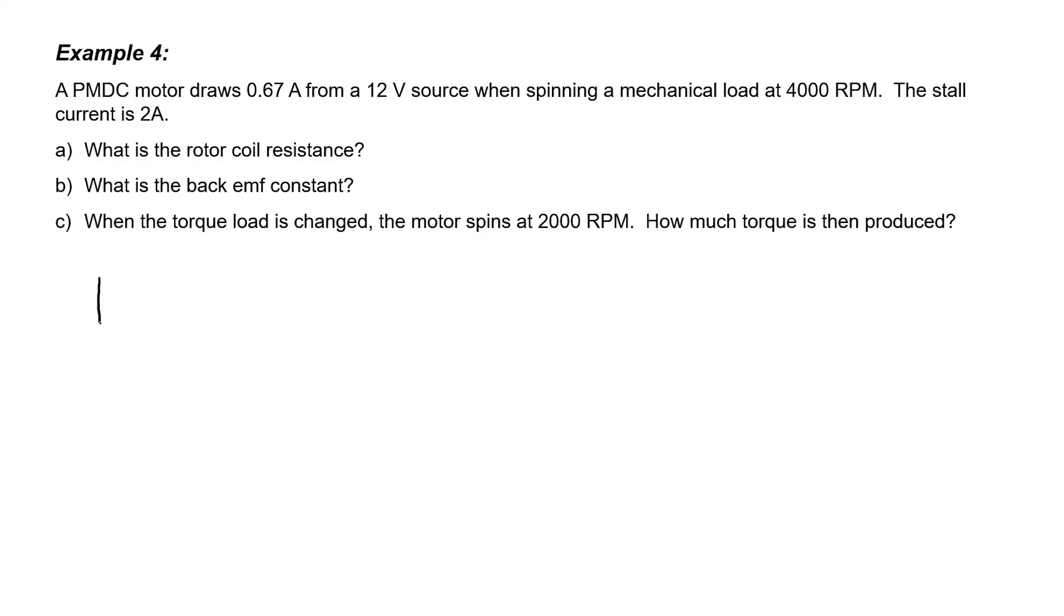In previous examples, we've looked at motors operating at a single speed driving a single load. In this example, we're going to look at a slightly more complicated situation. We're going to use measurements of a motor taken when it was spinning, driving one particular load, and use those measurements to predict how the motor will behave driving a different load. We're told that when the motor is spinning at 4000 rpms, it draws 0.67 amperes from a 12 volt source. But we don't know what the rotor coil resistance is. That's going to be a problem when we go to calculate the back EMF. I need to know the voltage drop across that rotor coil, and I'm going to have to have the resistance in order to get it.